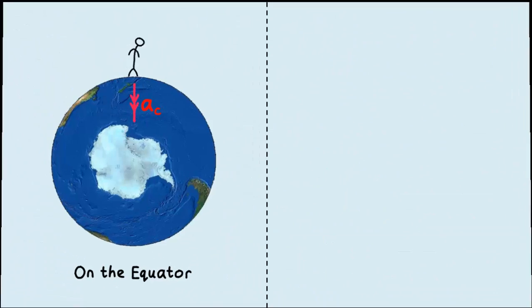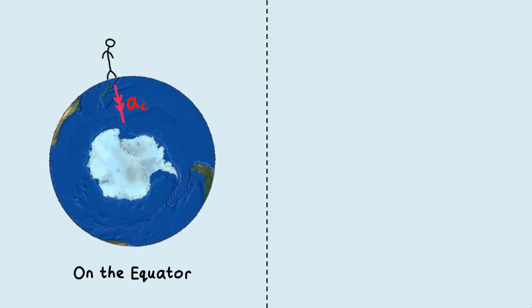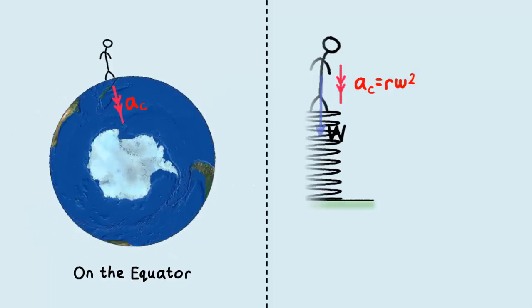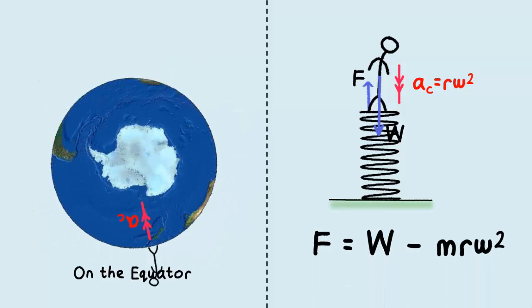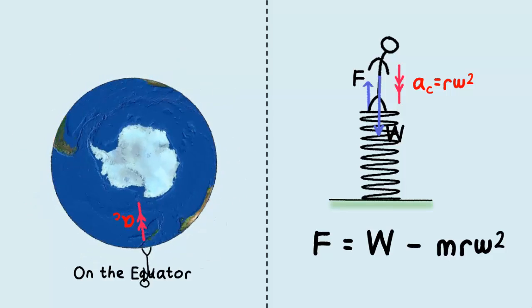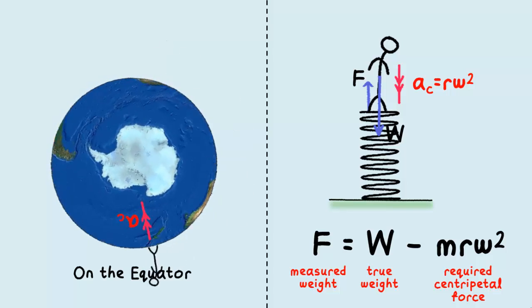If we are on the equator, a resting object is actually moving along a circular path, and circular motion requires a centripetal net force. This means the spring force must be smaller than the gravitational pull by an amount equal to the required centripetal force. What we measure is the apparent weight.